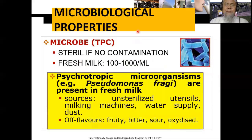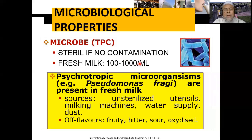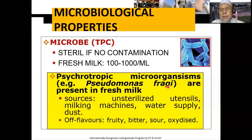Berikutnya ada kandungan mikrobiologi. Susu itu kalau tidak terinfeksi dari luar, tidak terkontaminasi melalui puting susu terutama, maka susu itu seharusnya steril. Namun kadang-kadang sampai dengan 1.000 per mililiter masih ditoleransi pada susu yang segar. Di SNI misalnya disebutkan 10 pangkat 6 per mililiter. Mikroba-mikroba ini terutama berasal dari sanitasi dan higienisnya yang kurang baik.